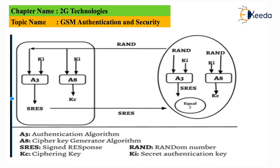The network side performs the same operations — using the algorithms and key along with the random number, it also generates a signed response. Once the mobile phone has generated its own signed response, it sends it to the network. If the network's signed response matches the mobile's signed response, the mobile phone is authenticated; otherwise it is rejected and no call service is provided. Upon successful authentication, the network sends the ciphering key KC so that all subsequent user information is ciphered.